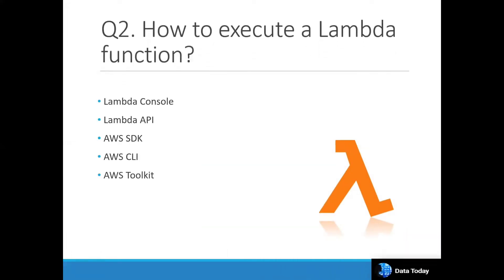The next question is: how to execute a Lambda function? You can execute it by using five ways. You can go to the AWS Console, go to the Lambda Console, and trigger that Lambda function by providing some key and value parameters. Another way is by calling the Lambda API. Another is by using Boto3 code, like in Python. And by using AWS SDK, CLI, and Toolkit — these are the various ways you can execute a Lambda.